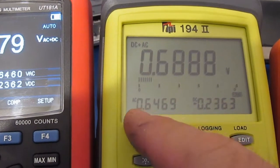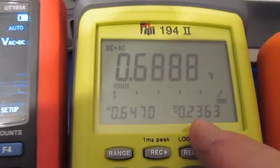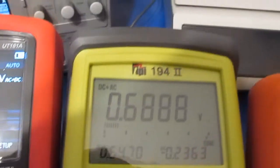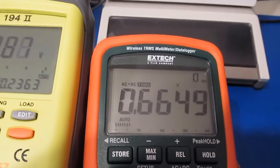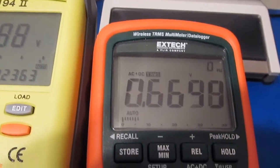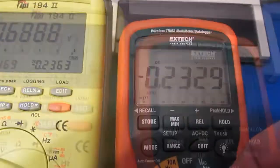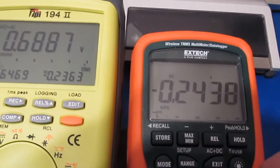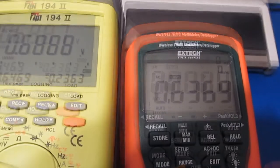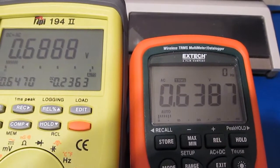This is the EX540. This is your AC plus DC, AC value here, and this will be your DC value, and then this is your AC value.